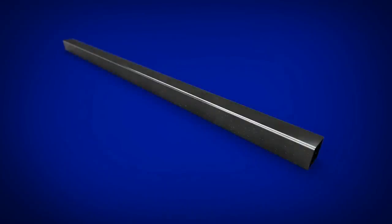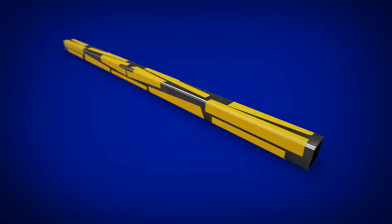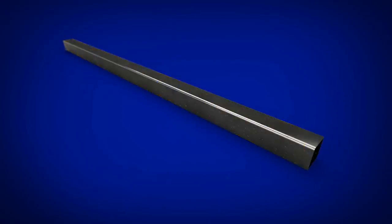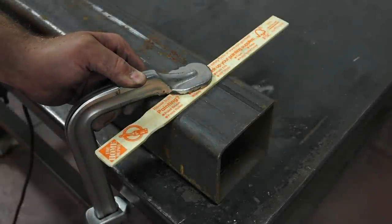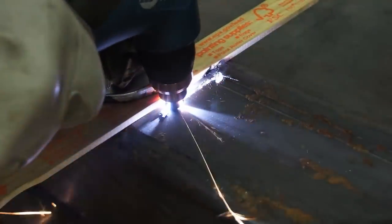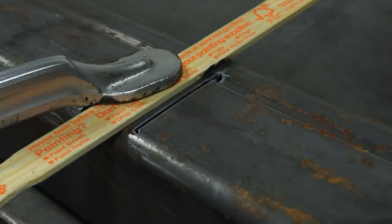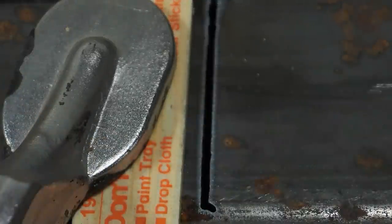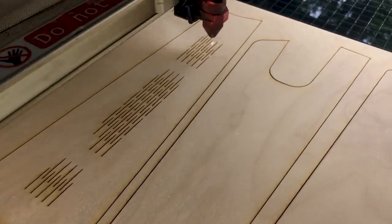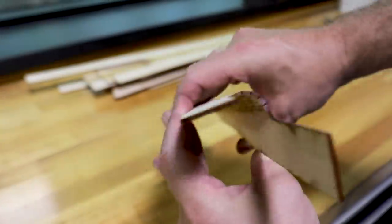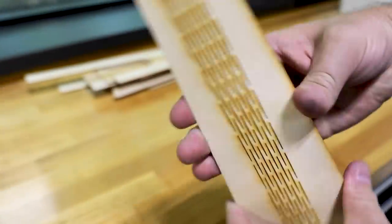Once I understood the plasma kerf, I could laser cut the patterns out of eighth inch Baltic birch plywood. The live hinge would allow me to wrap the geometry around the corner of the steel tube.